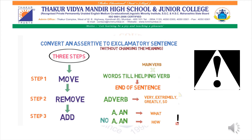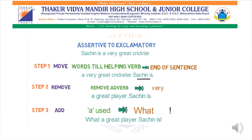This is one trick you can use while converting an assertive to exclamatory. First, it is very important to read the sentence carefully. The sentence is: 'Sachin is a very great cricketer.' We have to convert this into exclamatory. Since 'a' is there, we start with 'what.' Following our three steps — step one: we move the words till the helping verb to the end: 'A very great cricketer, Sachin is.' Step two: we remove the adverb 'very.' So the sentence becomes: 'A great cricketer, Sachin is.' Then we frame the sentence again.